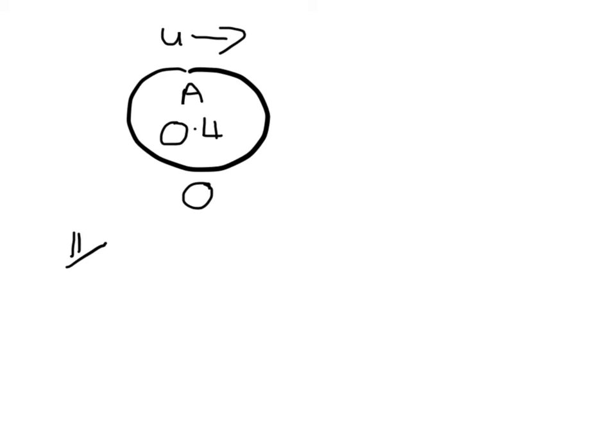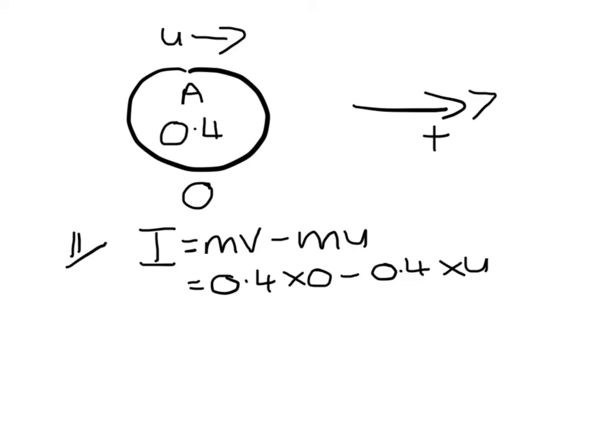Part 2, we're interested in the impulse on A. So impulse is my Mv minus Mu. So that will be 0.4 times 0 minus 0.4 times U. And again, throughout this question, I am taking the right-hand direction as positive. So that gives us an impulse of minus 0.4U, our units being newton-seconds. The mark scheme shows some alternative solutions for finding impulse, but this would be my preferred method.